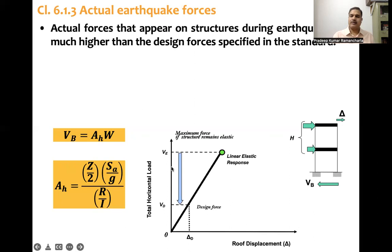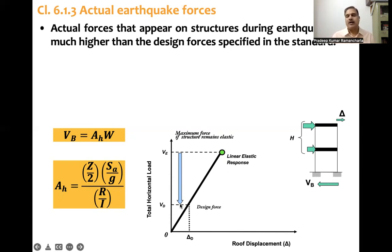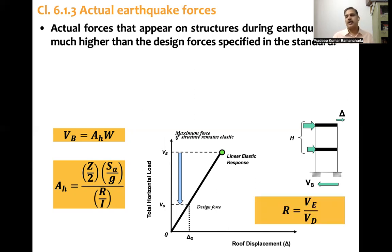V_E is the elastic base shear — the force when we do not reduce the forces, meaning when R equals 1. Our design forces are considerably less than the elastic forces because of the infrequent nature of such earthquakes. R is defined as the ratio of V_elastic to V_design, giving the response reduction factor.